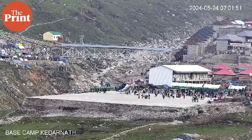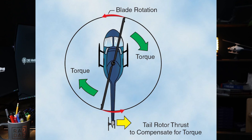That's why we have the tail rotor. The tail rotor provides the necessary counteracting force to balance the torque generated by the main rotor. It achieves this by producing thrust in the horizontal direction, perpendicular to the main rotor's rotation.